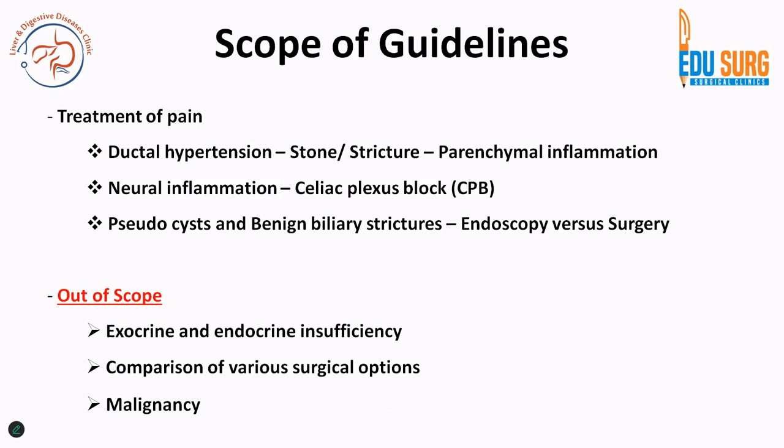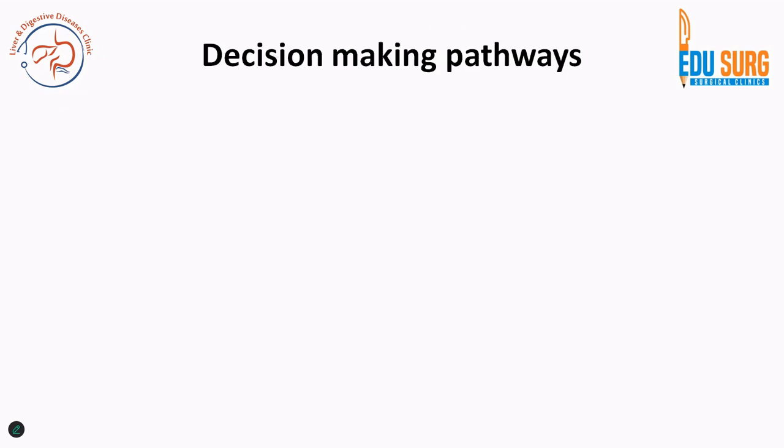What is out of scope for this article: it does not discuss exocrine and endocrine insufficiency — a separate AGA guideline covers that. It does not discuss comparison of various surgical options like the Frey procedure versus the Beger procedure or Frey versus Whipple. It also does not discuss management of malignancy that can arise in the head mass of chronic pancreatitis. If you are looking for data on these three topics, this guideline does not help you.